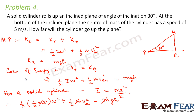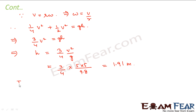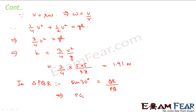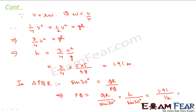Now we calculate the distance PQ up which the solid cylinder moves along the inclined plane. Using simple geometry on triangle PQR: sin 30° = QR / PQ, so PQ = QR / sin 30° = h / sin 30° = 1.91 / (1/2) = 3.82 m. So 3.82 m is the distance up which the solid cylinder travels up the inclined plane.